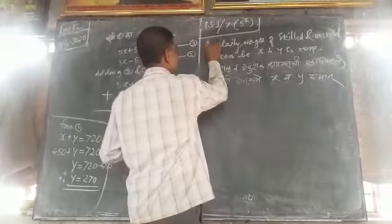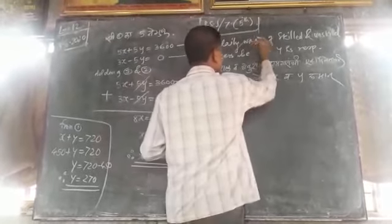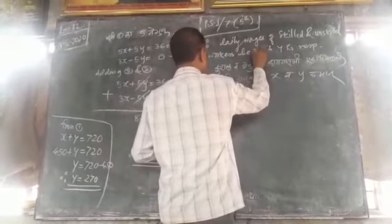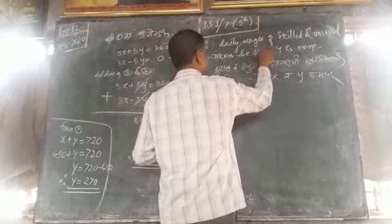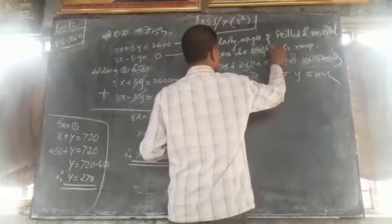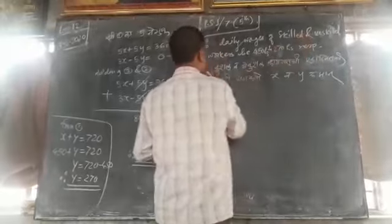Therefore, daily wages of skilled and unskilled workers are 450 rupees and 270 rupees respectively.